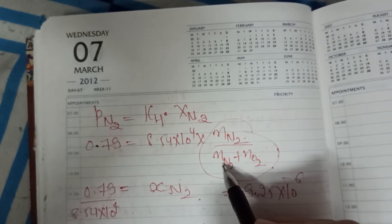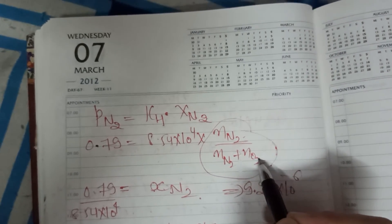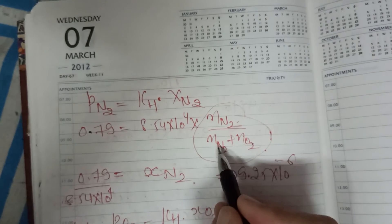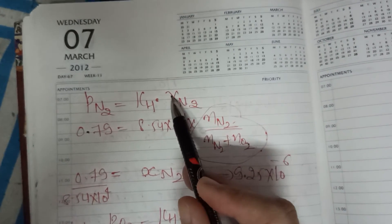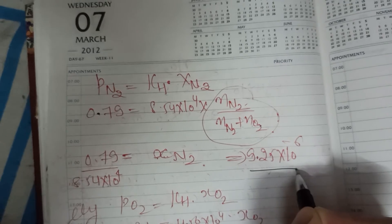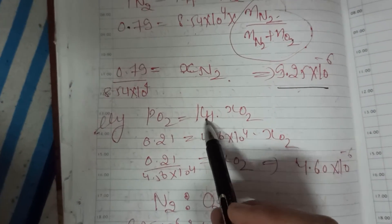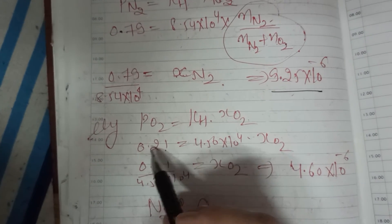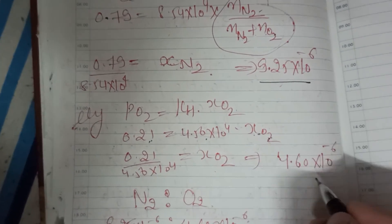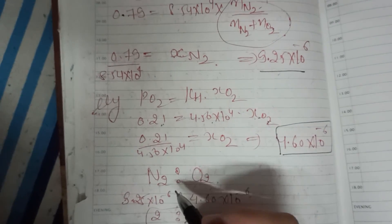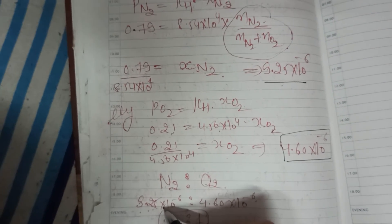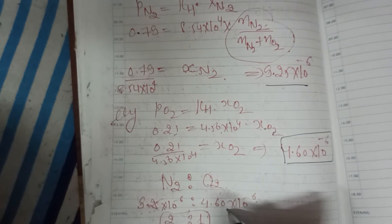Partial pressure of nitrogen = kH × (moles of N₂) / (moles of N₂ + moles of water). Since we need to find mole fractions, we keep XN₂ as the unknown. Dividing by the Henry constant gives mole fraction of nitrogen = 9.25 × 10⁻⁶. Similarly, for oxygen: partial pressure of oxygen = 0.21, kH for oxygen is given, and solving gives mole fraction of oxygen = 4.60 × 10⁻⁶.